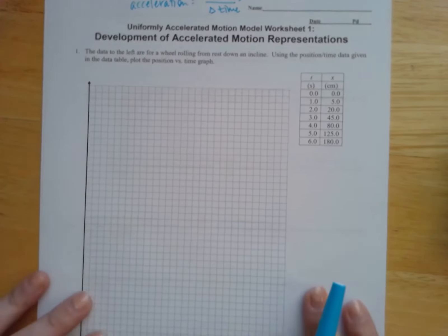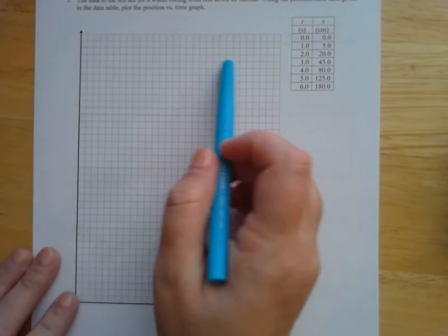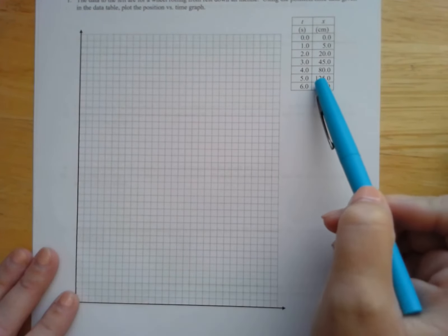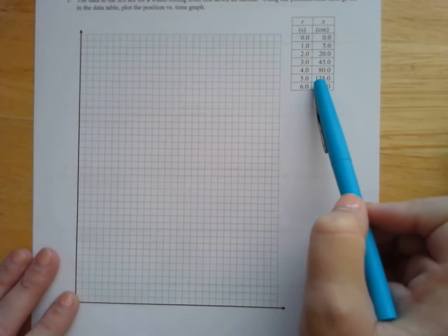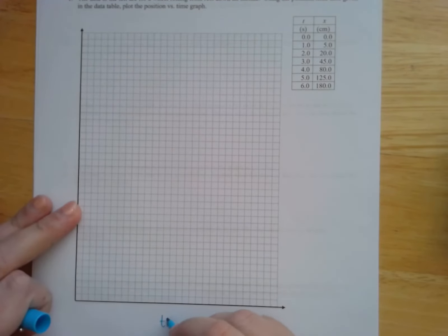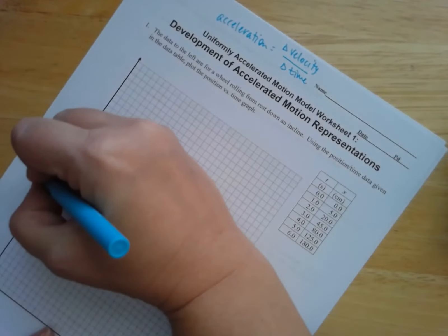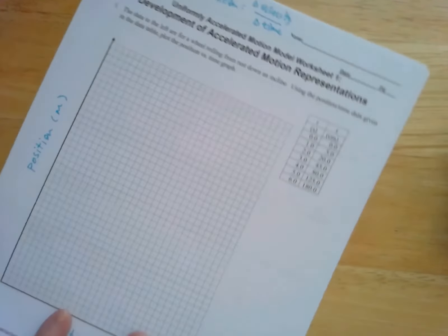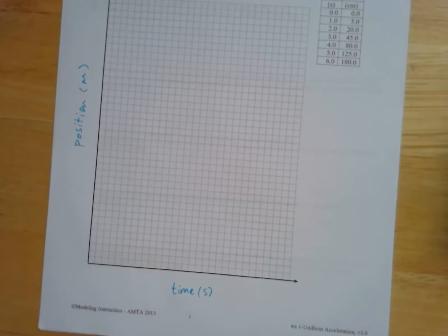So on the first page, what you need to do is use this graph grid to plot the data that's given to you in this little table. And so you're going to divide the bottom up into segments for time and the side for position. So we're going to have time on one side, position on the vertical axis. We need to label that, include our units for both of those things.